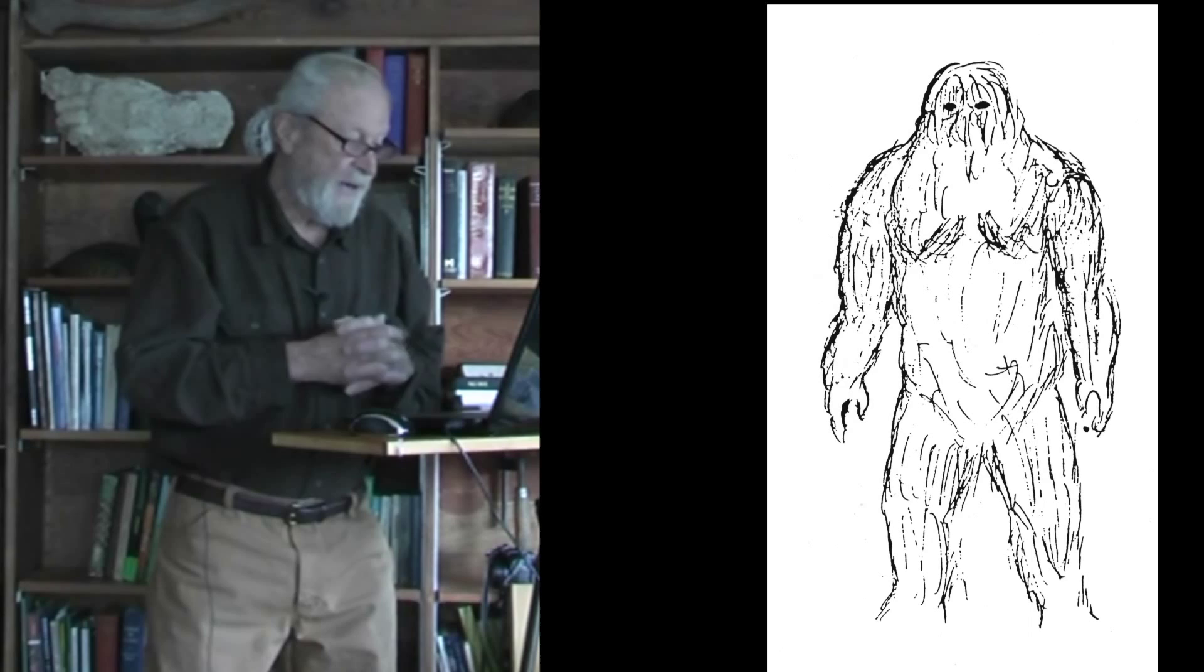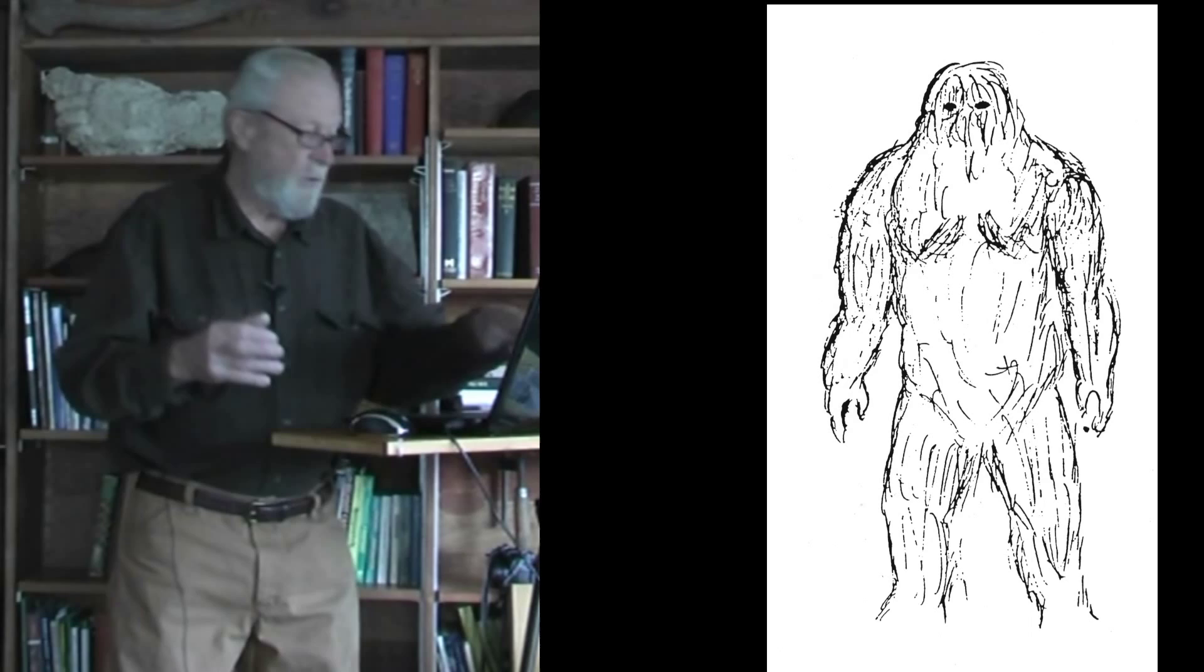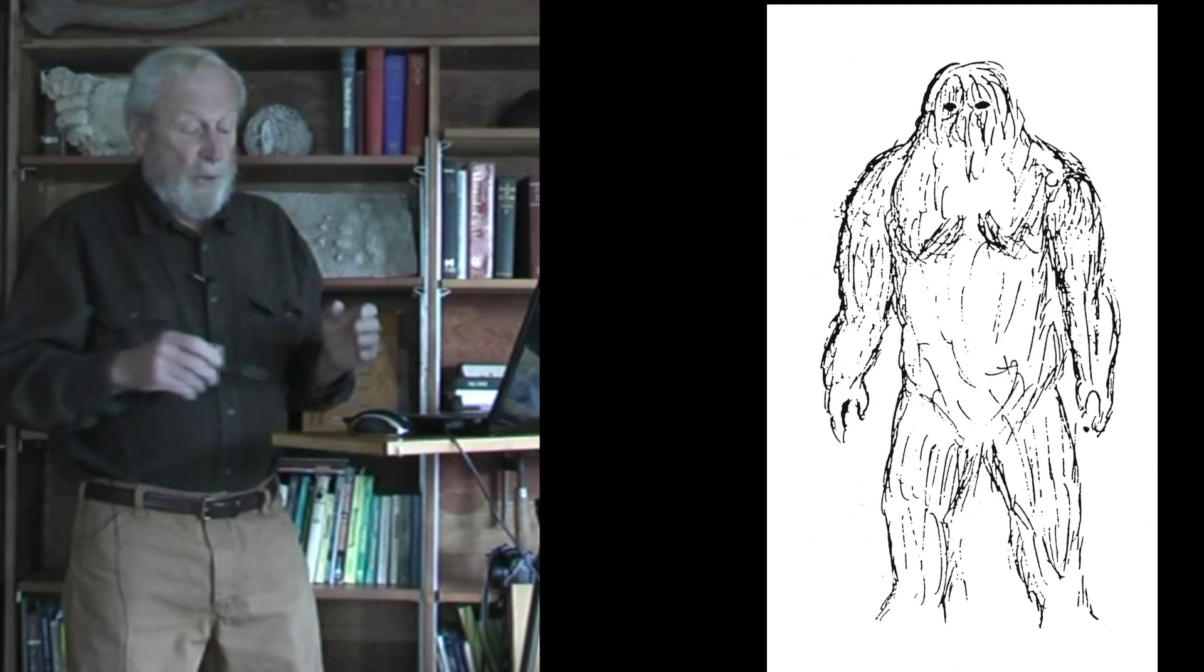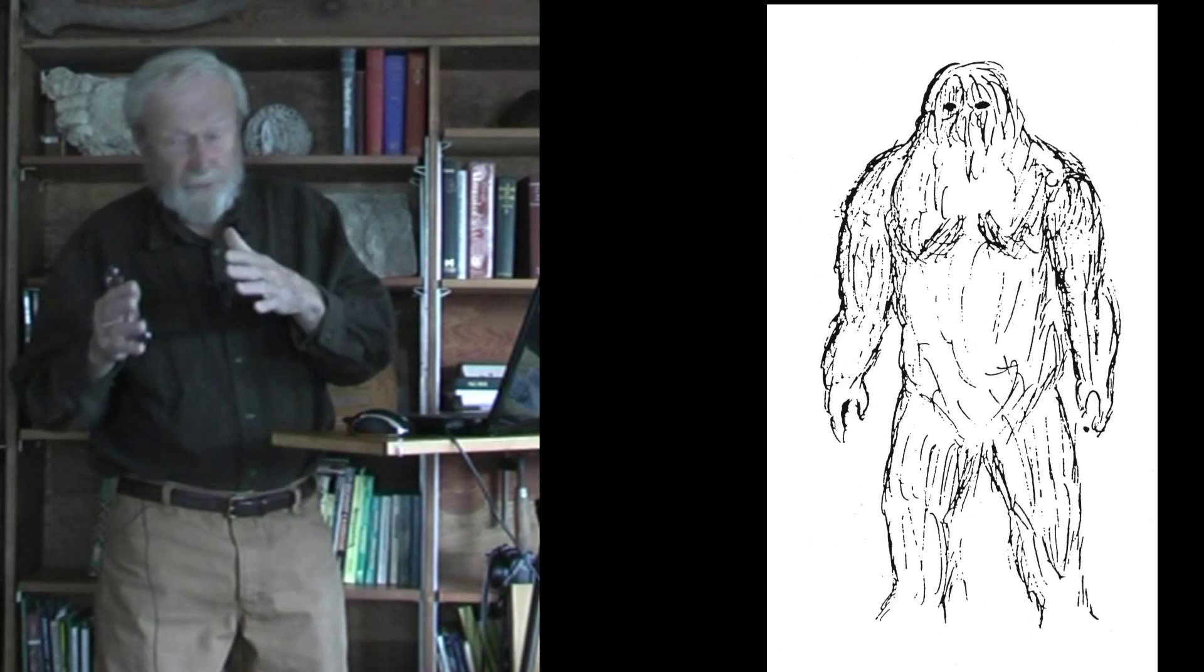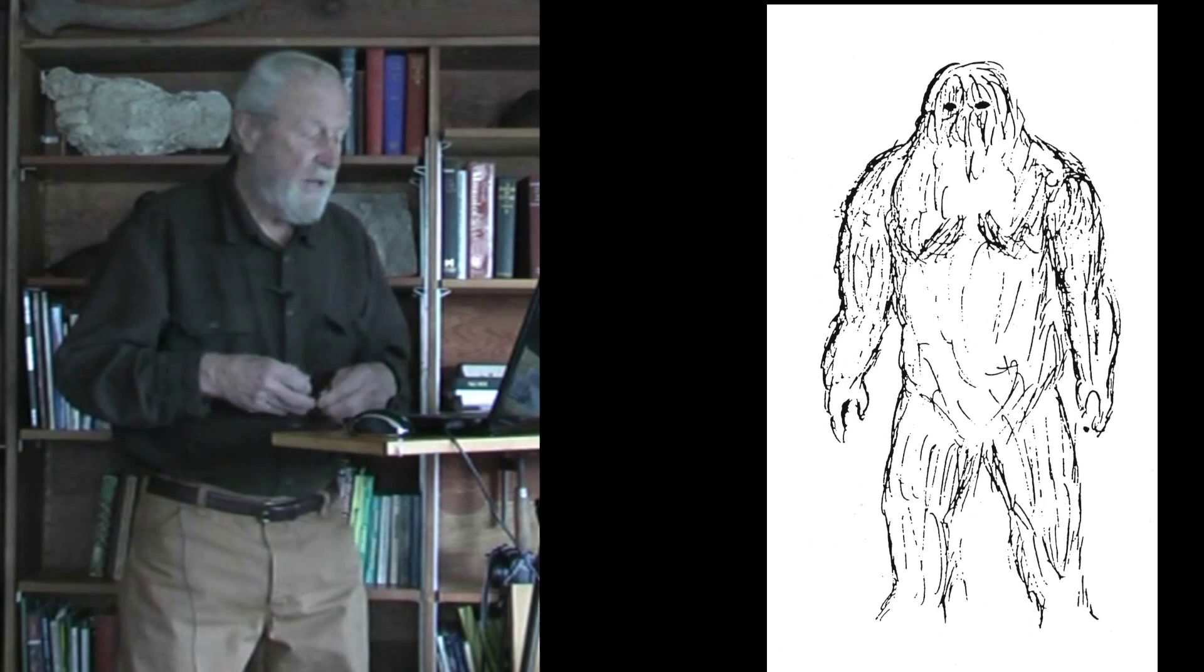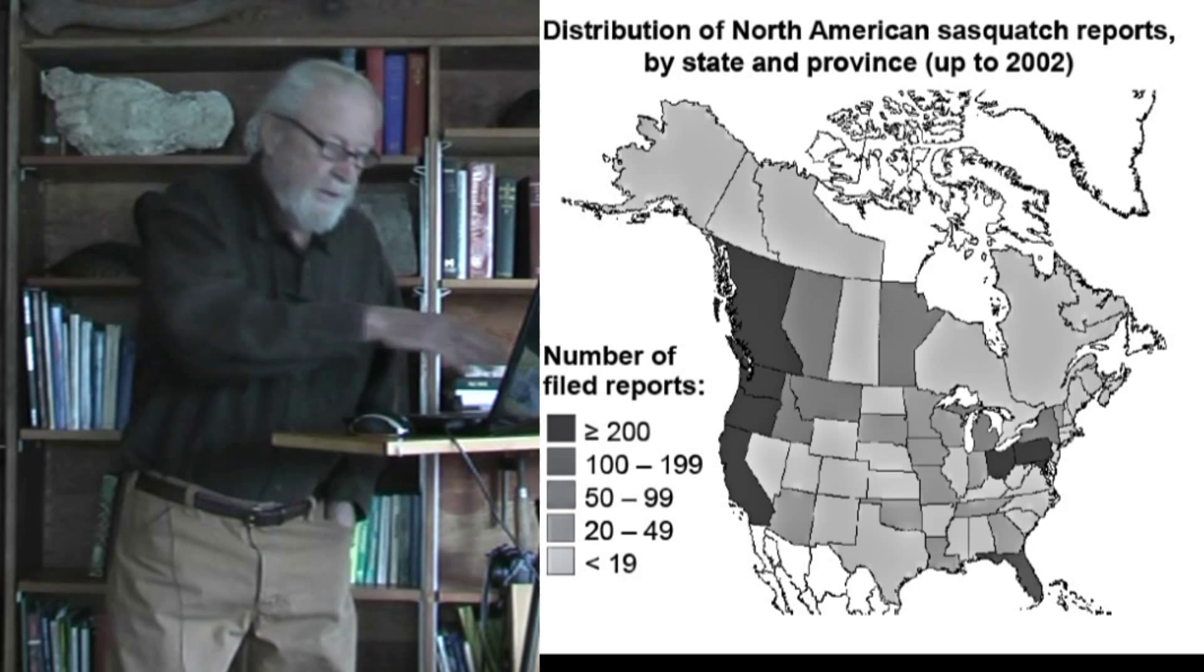Not so much now, but a few years ago, if one mentioned Sasquatch from Ontario, Canada, or from Ohio, eyebrows would be raised even more than usual because the Sasquatch used to be considered a mammal, if it existed, of the Pacific Northwest, the western states of the US and Canada. So let's look at this map, which shows the distribution of reports, although it's getting a bit old now. 2002 is when I made that map.